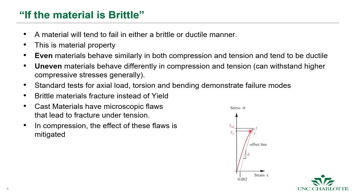Brittle materials fracture instead of yield, although published yield strengths are very close to the ultimate tensile strength — so if you're near yield strength you're also very close to failure. Many brittle materials are cast and can have microscopic flaws from the manufacturing process, leading to fracture under tension much more easily than ductile materials. In compression, the effect of those flaws is mitigated — that's the primary mechanism behind uneven material behavior.